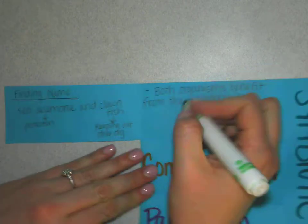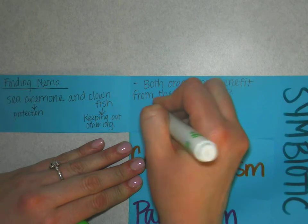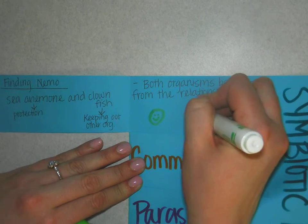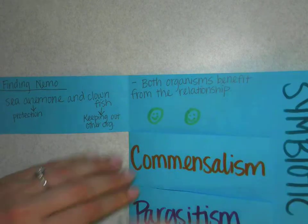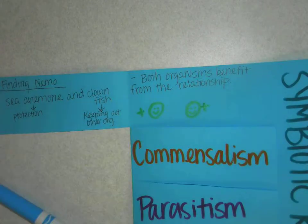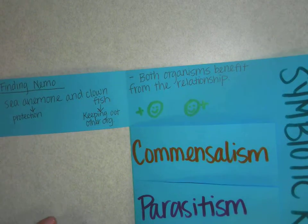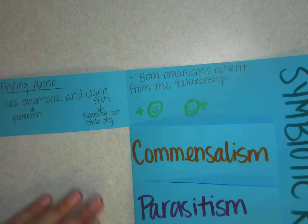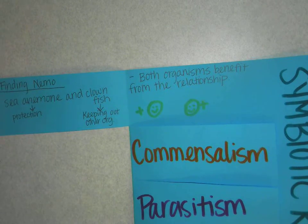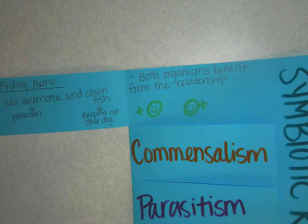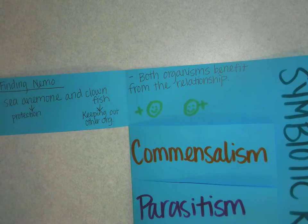So if both of them are benefiting, that means we have positive, happy relationships for both — both organisms are positive, both organisms are happy. That is mutualism. Another example of mutualism could be a flower and a bee. A bee drinks nectar and gets energy from the flower, and then the bee helps out the flower by pollinating it. So that's another example of mutualism.